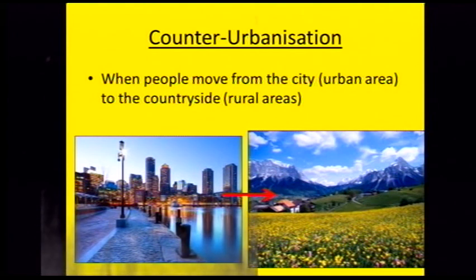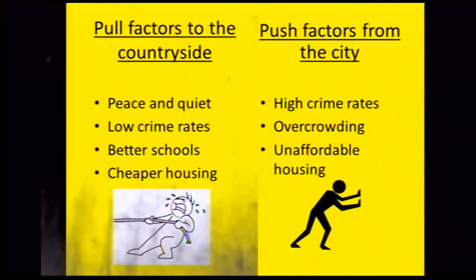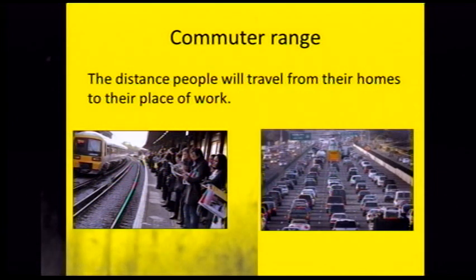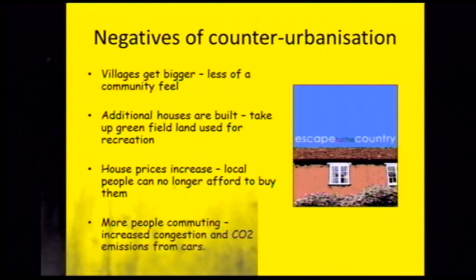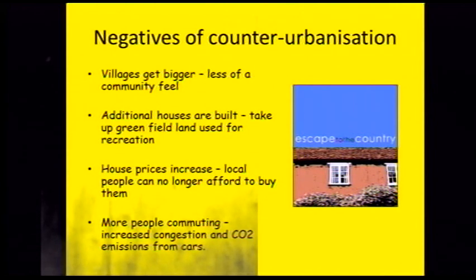Counter-urbanisation is the opposite — moving from the city to the rural area, and this generally happens in MEDCs. People want peace and quiet in the countryside, low crime rates, better schools and cheaper housing. The things pushing them out of the city are high crime rates, overcrowding and unaffordable housing. The commuter range is the distance people will travel from home to their place of work. Negatives of counter-urbanisation: villages get really big and lose their community feel; additional houses are built on greenfield land no longer used for recreation; house prices increase so local people can't afford them; and people commute to the city by car, increasing CO2 emissions and congestion, contributing towards climate change.